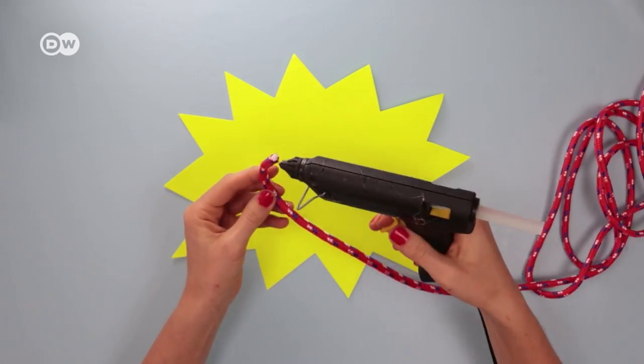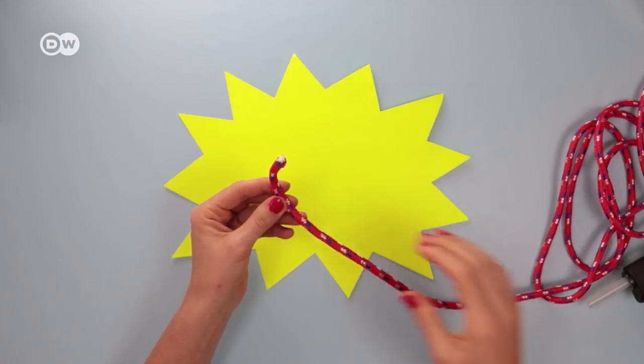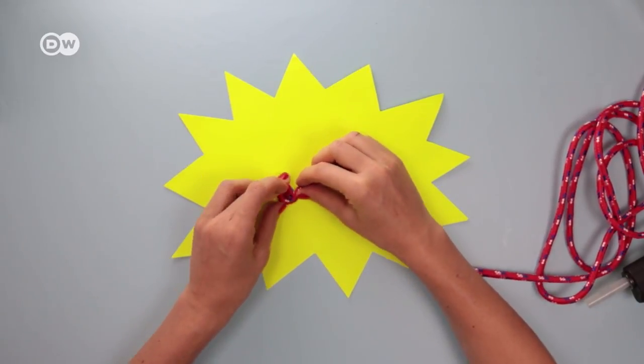Work on a surface made of cardboard, for example, since the glue can drip. Apply a little glue to the tip of your cord and roll it into a spiral.